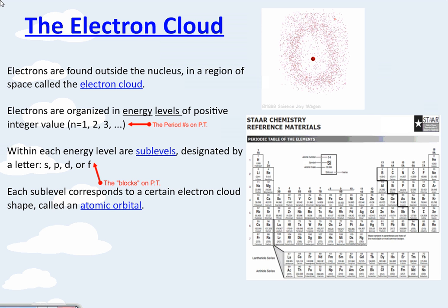Electrons are found outside the nucleus in a region of space called the electron cloud. To the top right, I have a little diagram and as you can see, there's a little red dot bouncing around everywhere. This is our electron and it's more of a real life example of what electrons do. They kind of just move around randomly. So we do our very best to predict where they actually would be located.